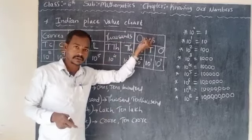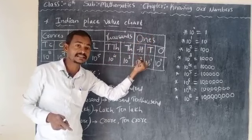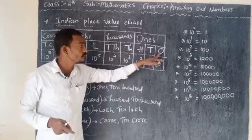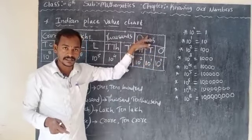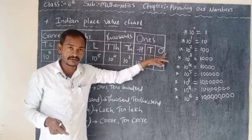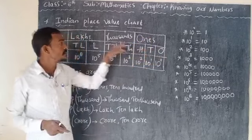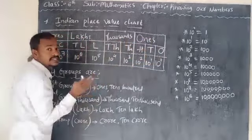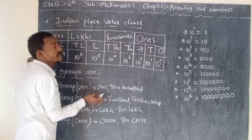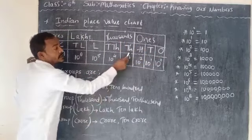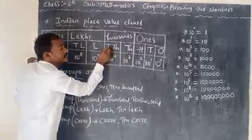In the 1s group — the first group — the places are 1s, 10s, and 100. The second group is the 1000s group.